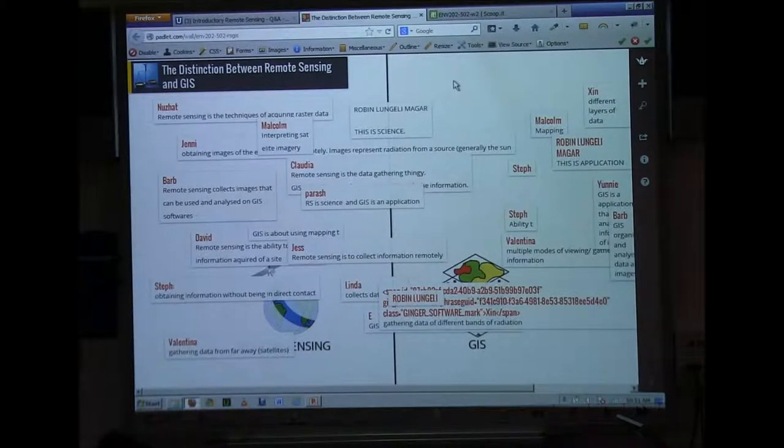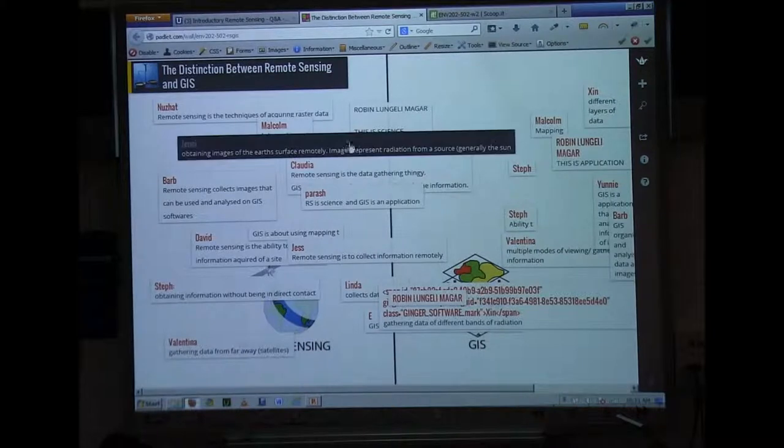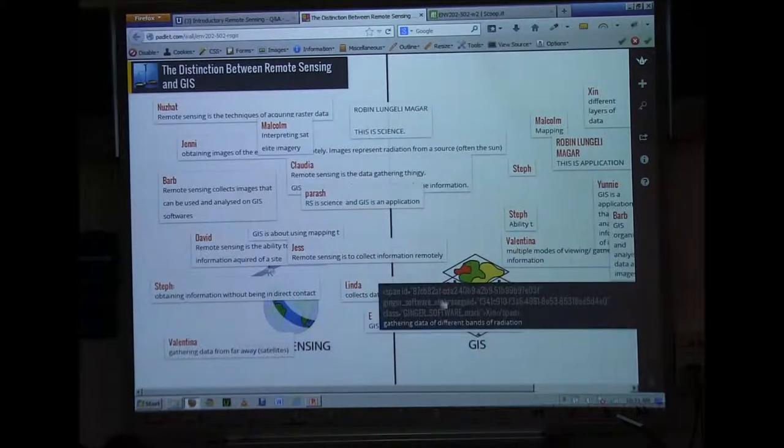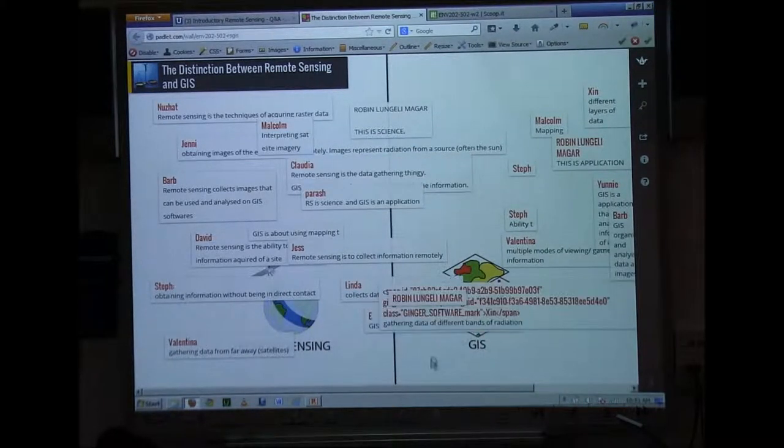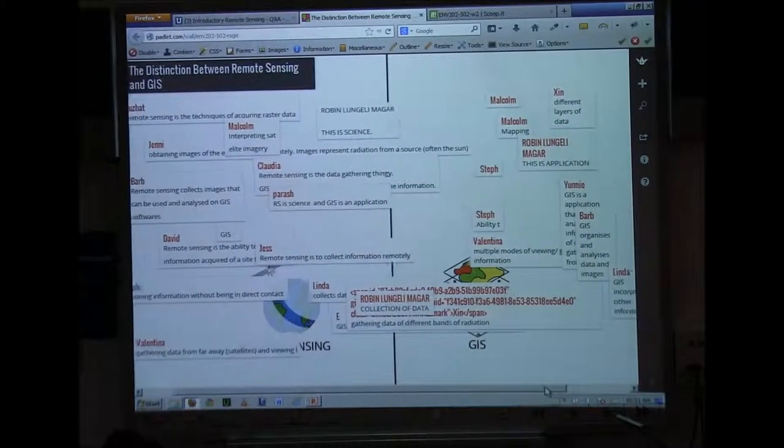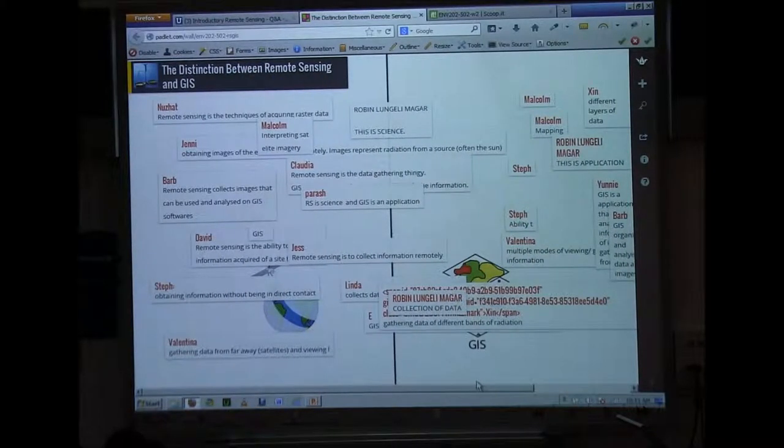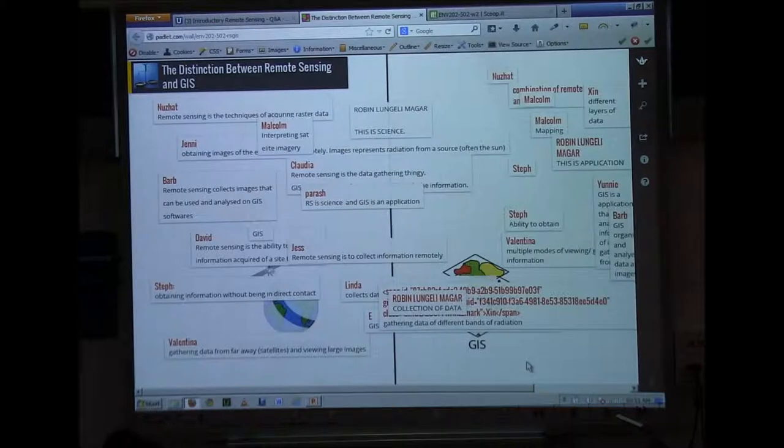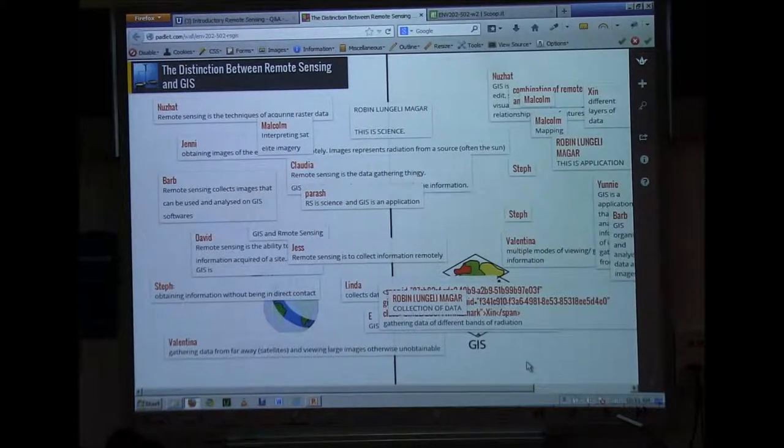When we look at the term geographic, that's all about something that's spatial or location oriented. And then our final term within GIS is information. It's about collecting data and providing knowledge about something. You can see even when we break down the two terms, we've got collecting data for remote sensing and that integrated system for GIS which encompasses more than just data.